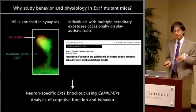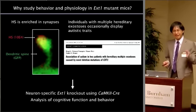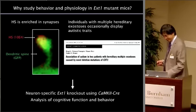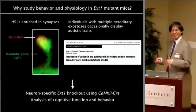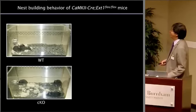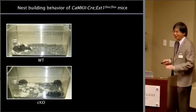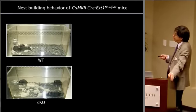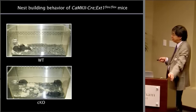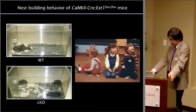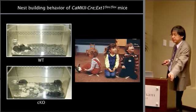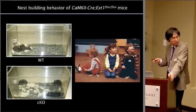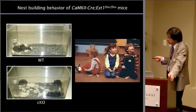If you attended this meeting last year, you are unlucky — you can sleep for the next ten minutes while I show the data. But I have to show it, otherwise the second part will not make any sense. First, we looked at nesting behavior. These are the wild-type mice. These are the conditional knockout mice. You can see they don't form a communal nest, which is actually somewhat similar to the behavior of autistic kids who do not socialize very well.